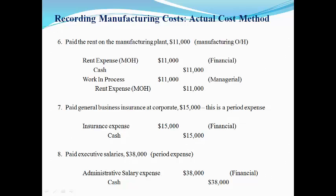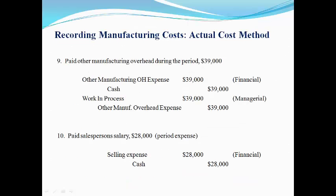Transactions 7 and 8 are period costs. The financial accountant records period costs. Other manufacturing overhead costs such as utilities or janitorial expenses are recorded as an expense by the financial accountant and moved to work in process at the end of the period. The salesperson salary expense is a period cost and is recorded as an expense by the financial accountant.